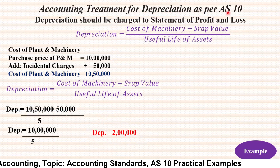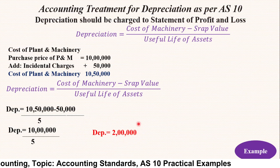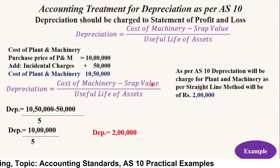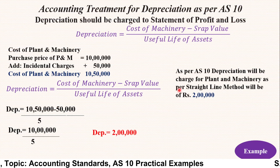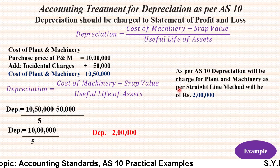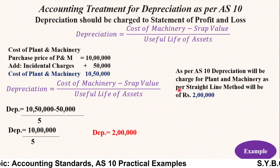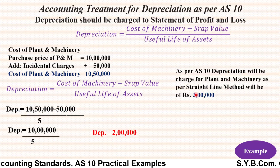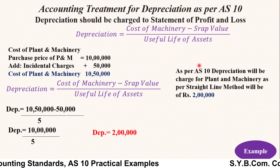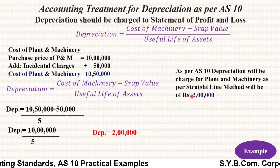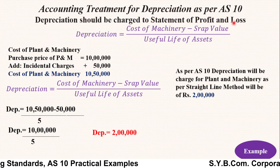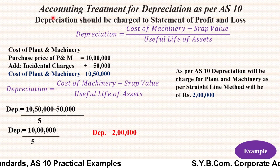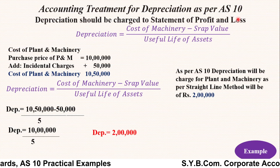As per Accounting Standard 10, you can charge rupees 2 lakh as depreciation for the plant and machinery. Under the straight-line method, depreciation will be rupees 2 lakh, and it has to be recorded in the Statement of Profit and Loss Account for each and every year. Because we are using the straight-line method, rupees 2 lakh will be charged as depreciation every year in the Statement of Profit and Loss.